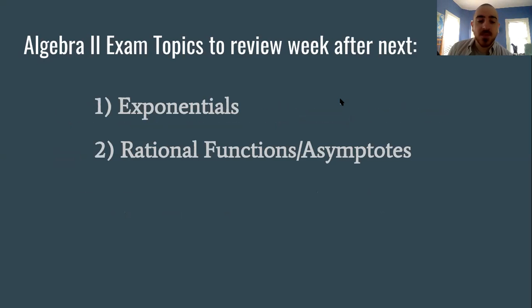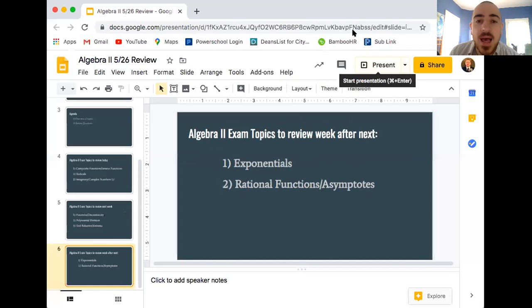I'm going to go to now my whiteboard and we're going to do some problems together real quick. So here is the whiteboard. The first thing I want to review is composite functions. For example, let's say your f of x is x squared plus 2, and then your g of x is x minus 7.